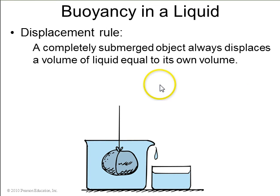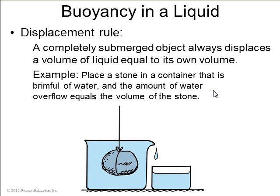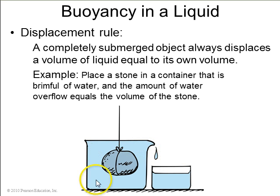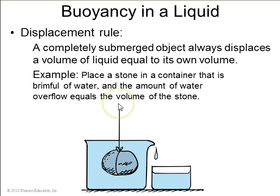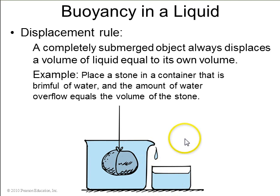The displacement rule is that a completely submerged object always displaces a volume of liquid equal to its own volume. For example, if you have a container that was filled to the brim with water and then you dip a stone in the water and carefully measure how much water spills out, this displaced water will have a volume equal to the volume of the rock.